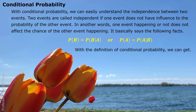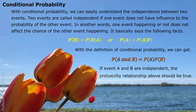With the definition of conditional probability, we can derive that if P(A and B) equals P(A) multiplied by P(B), they are called independent. Or conversely, if two events A and B are independent, then this expression must be true: P(A and B) — called joint probability — equals each event's probability multiplied together. This is the feature for us to recognize if two events are independent.